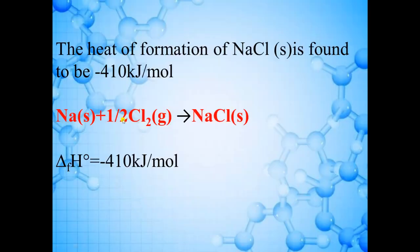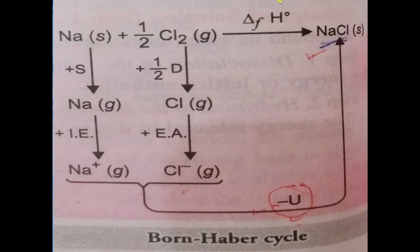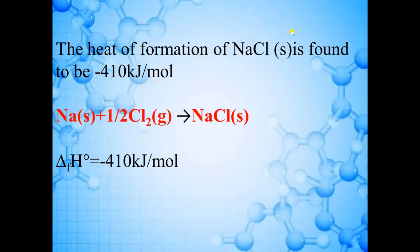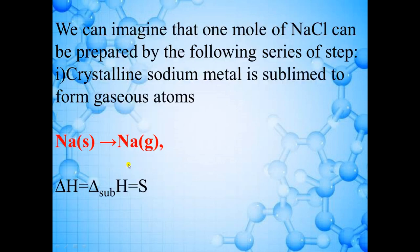There are two important consequences of lattice enthalpy. First: greater the lattice enthalpy, more stable the ionic compound — when ions combine and release more energy, the compound is more stable. Second: greater the lattice enthalpy of an ionic compound, less is its solubility in water, because the compound is already stable. So dissolution in water will be less and hydration enthalpy will be less.